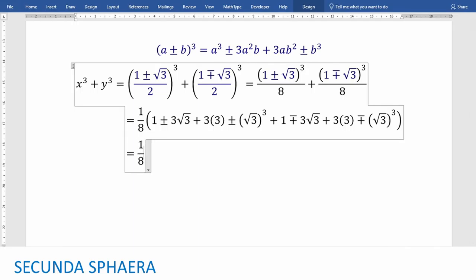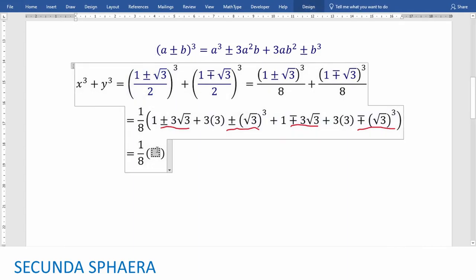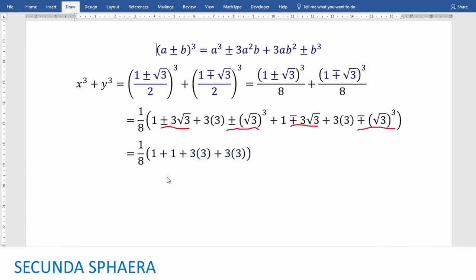I am going to scroll down because we no longer need the information about x and y. So we have 1 over 8. And now we can simplify a couple of things. First of all, we see that we have a plus minus 3 square root of 3 and we have a minus plus 3 square root of 3. In both cases, they are going to cancel out. And we also have a plus minus cube square root of 3 and a minus plus cube square root of 3. So, again, it is going to cancel out. So, having said that, we just plug in the remaining values. And we just have this expression. Which, we have duplicated the 1 and the 3 times 3. So we can cancel out 2 from this expression and the denominator.